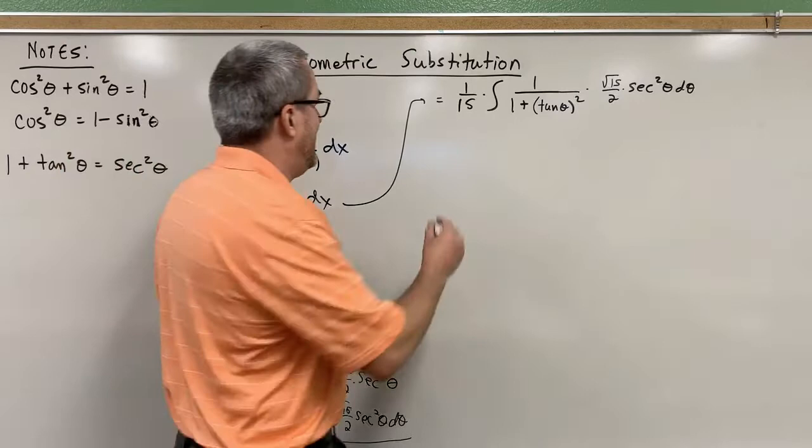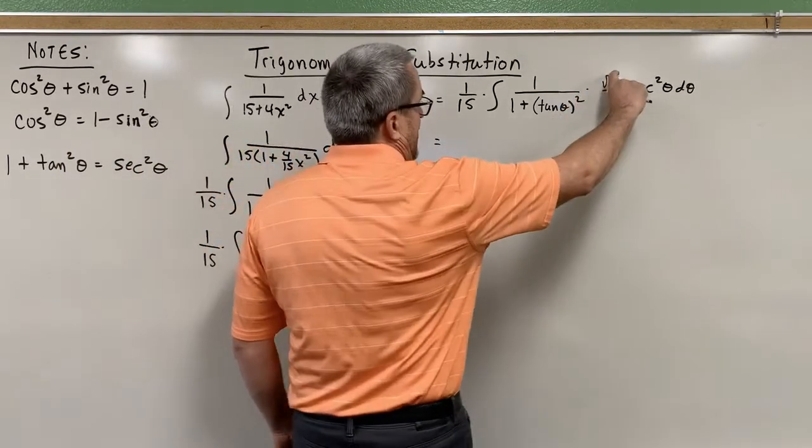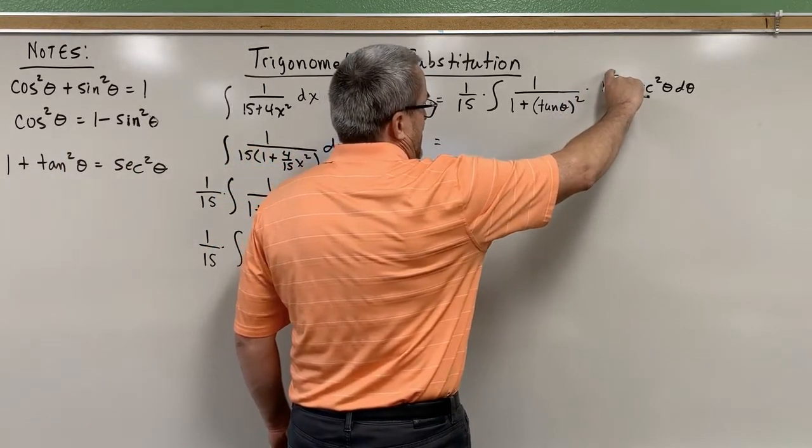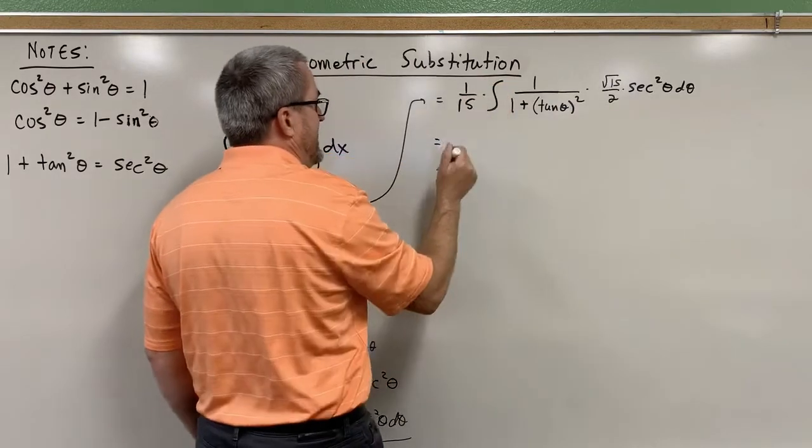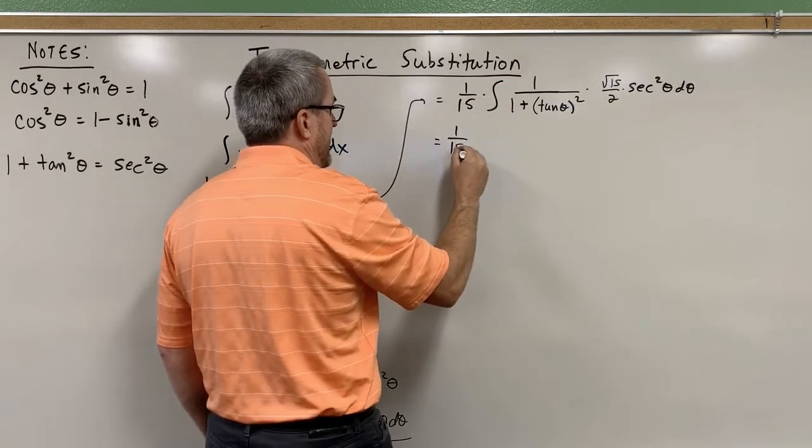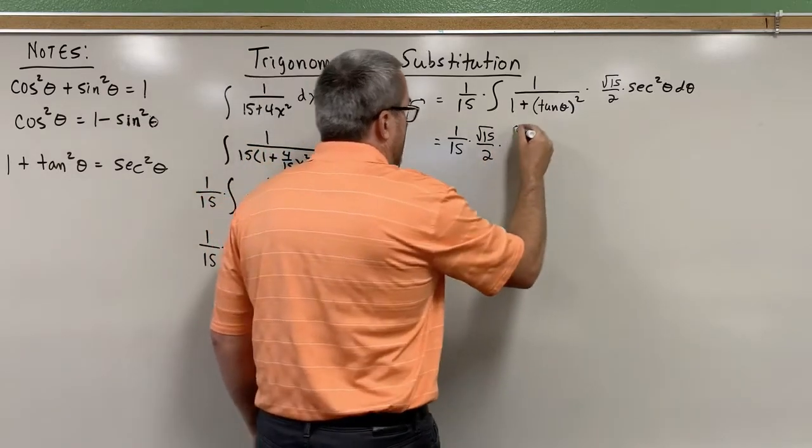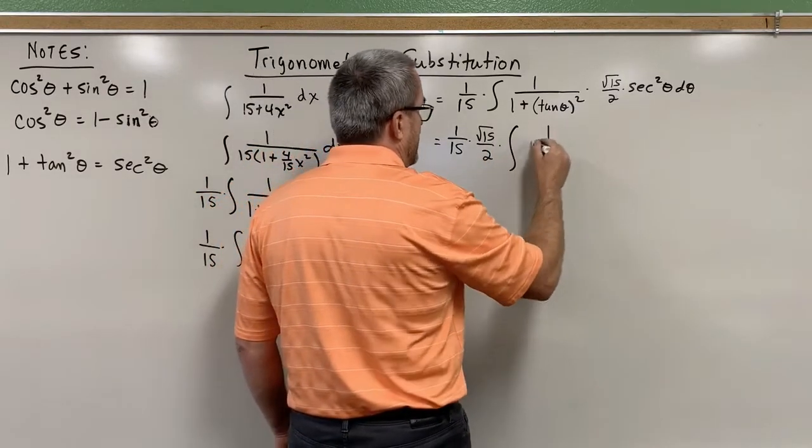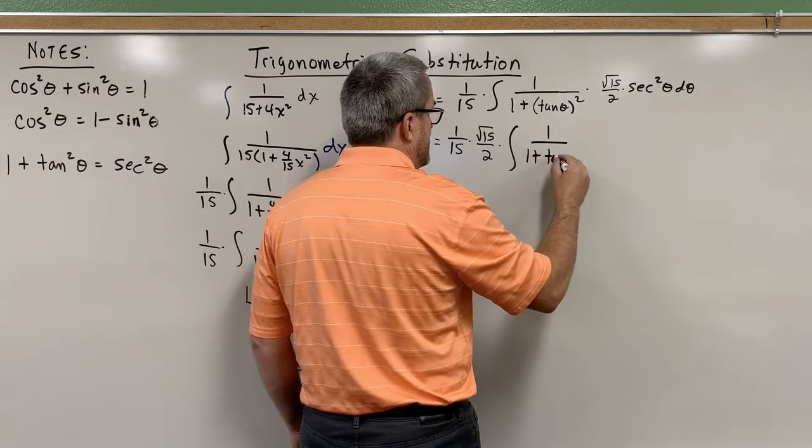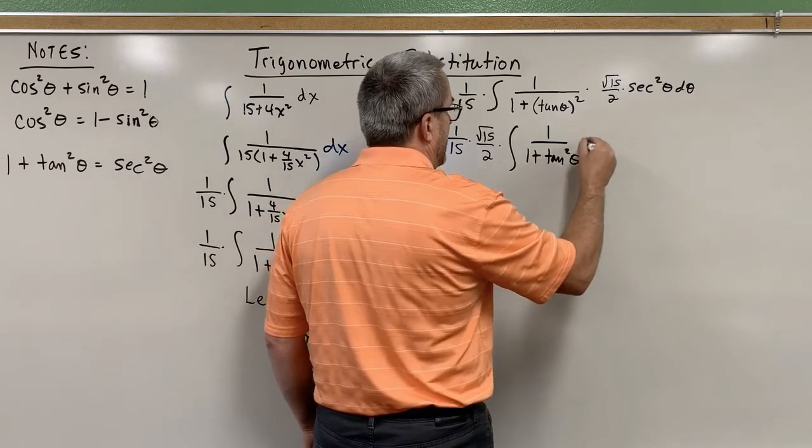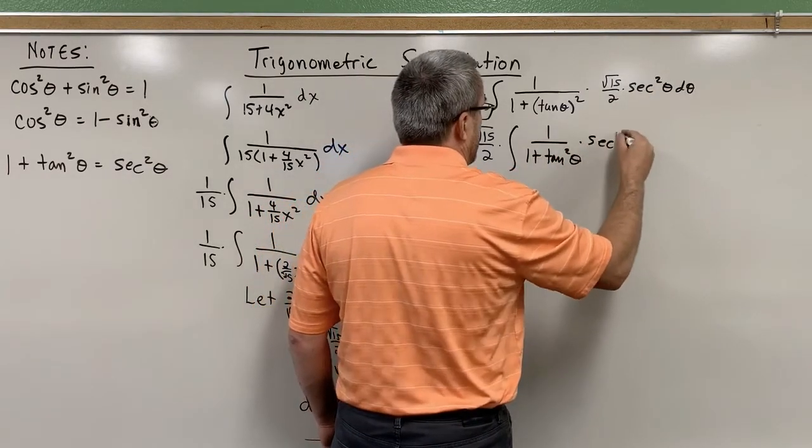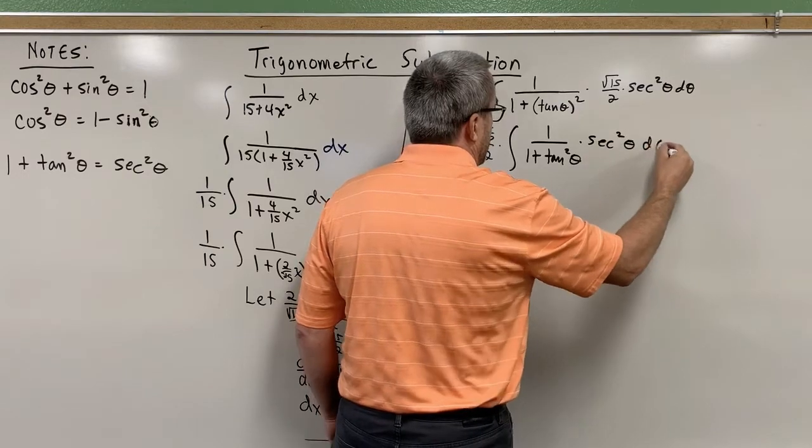First, another factor here, a multiplier of the square root of 15 over 2 we can bring out front. And we have this integral. We'll have 1 over 1 plus tangent squared of theta. We'll have secant squared theta d theta.